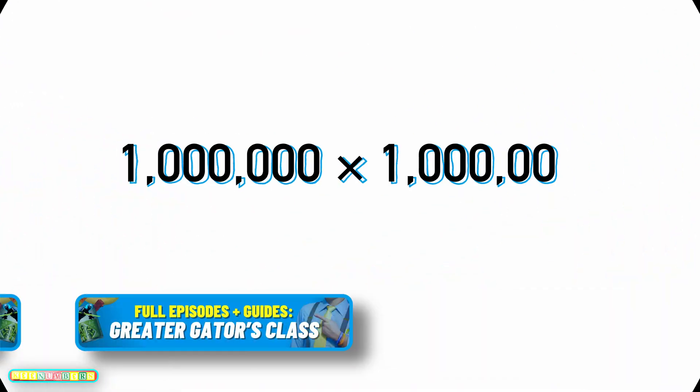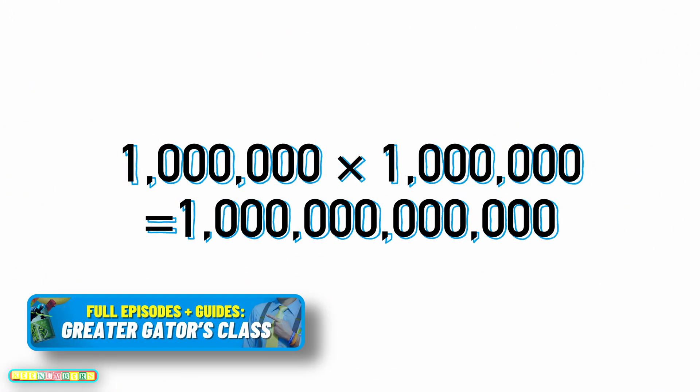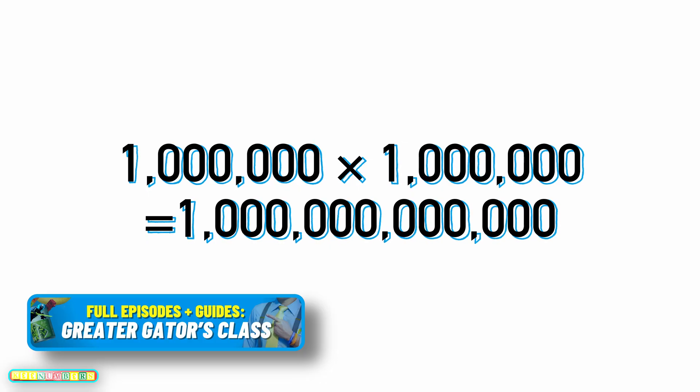In the bonus section: 1 million times 1 million we already established as 1 followed by 12 zeros.